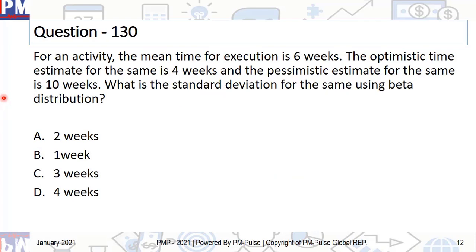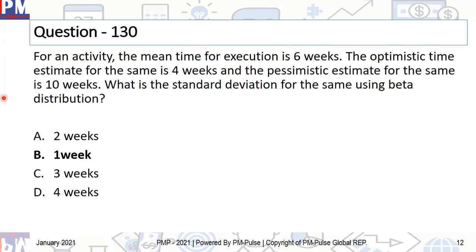Let's move on to question number 130. The correct answer is one week. The calculation is simple: in PMP, we use the beta distribution method for standard deviation, which is pessimistic minus optimistic divided by six. The longest duration here is 10 weeks, which is pessimistic; the shortest is 4 weeks, which is optimistic. So 10 minus 4 gives you 6, divided by 6 gives you 1. There you go — one week.